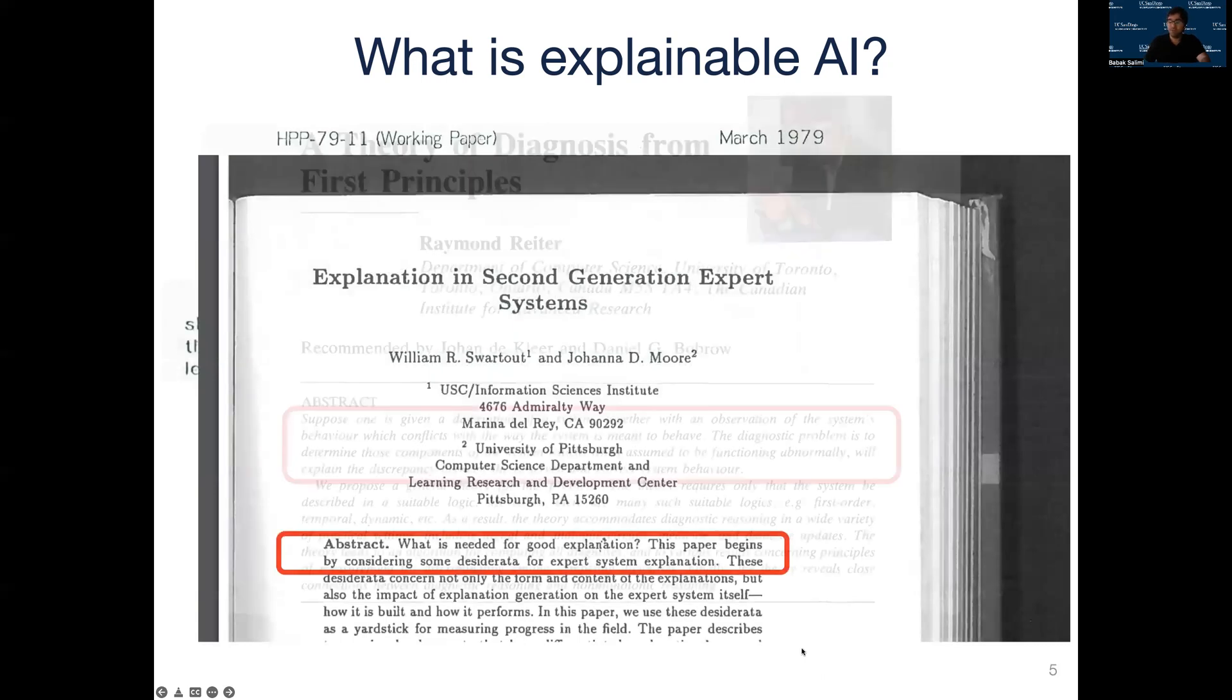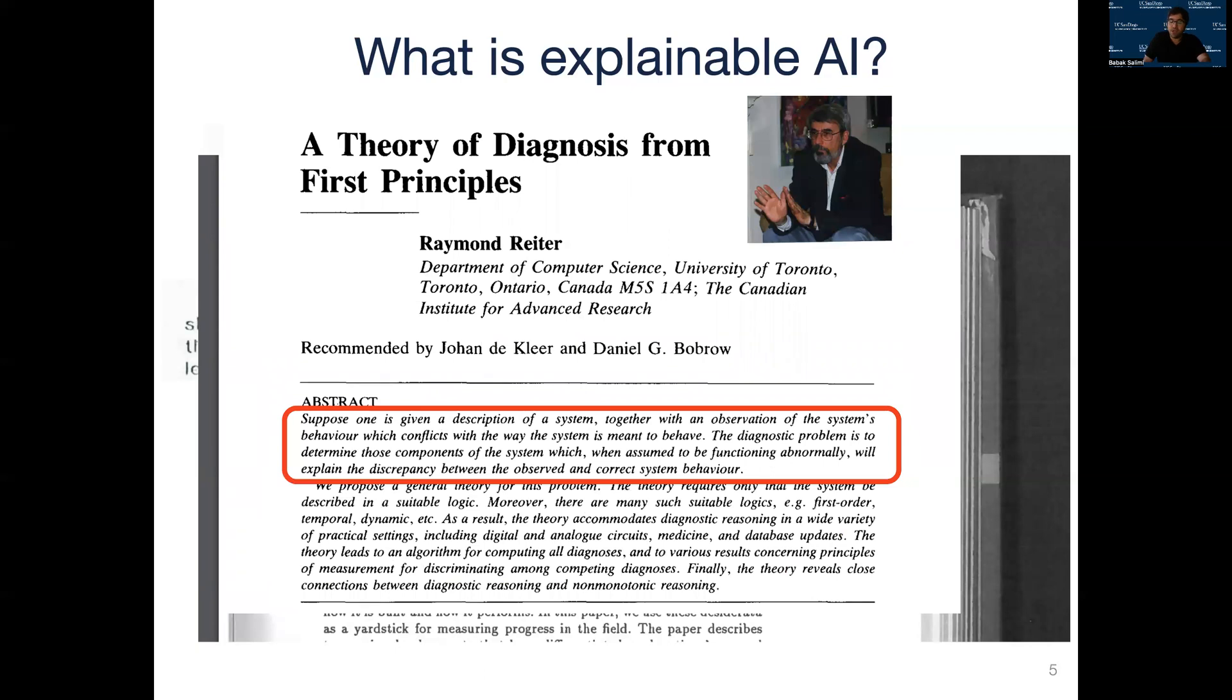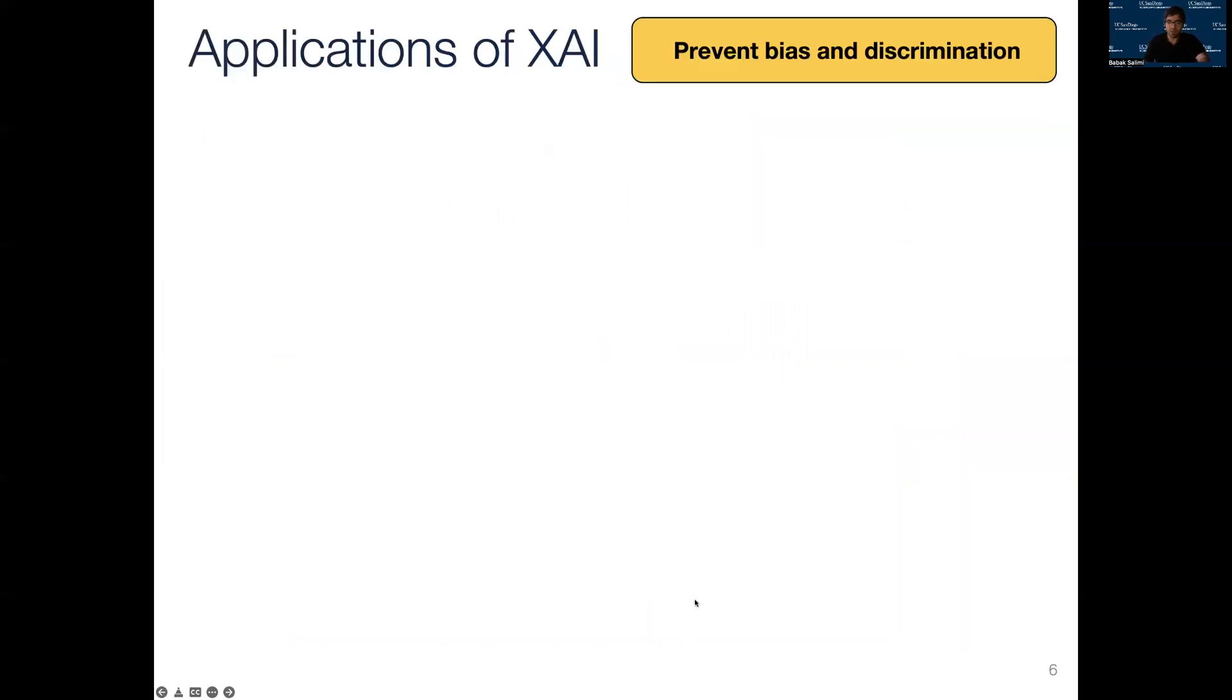Perhaps our community is more familiar with logic-based frameworks for explanations and diagnosis based on the early works of Ray Reiter in the context of abductive reasoning and model-based diagnosis, in which the goal was to find explanations for anomalous systems behavior and recommend repair actions to mitigate them. As a matter of fact, many contemporary methods for explainable AI borrow ideas from model-based diagnosis. Now, let's be more concrete about applications of explainable AI today. The first and foremost application is to be able to answer normative questions about an AI system and to be able to identify and mitigate sources of bias and discrimination in algorithmic systems. A common way to do so is to use explanations to ensure that the decisions made by an algorithm is invariant and independent of sensitive attributes such as race and gender.